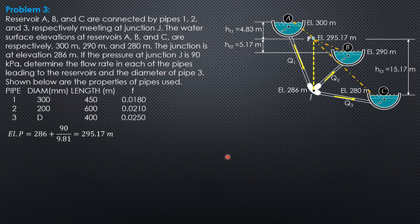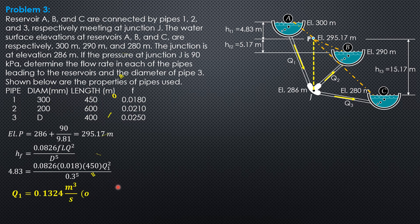So we can now compute Q1. Formula first: HF equals 0.0826 by Darcy-Weisbach, FLQ square over diameter to the 5th. So HF1, 4.83 equals 0.0826, friction factor 0.018, length 450, Q1 square over diameter 0.3 to the 5th. So Q1 is 0.1324 cubic meter per second and it is outflow from Reservoir A.